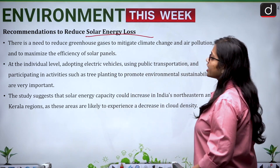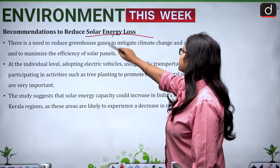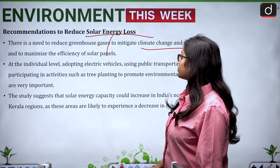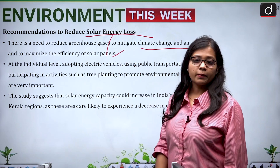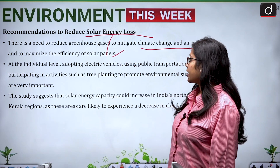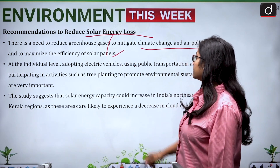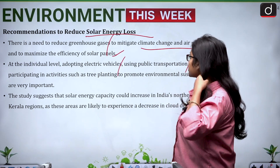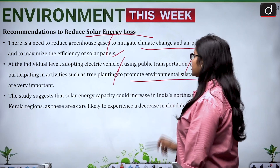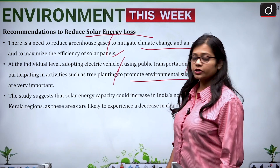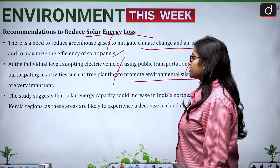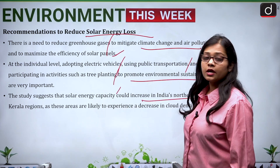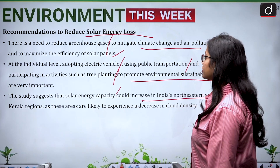Recommendations to reduce solar energy loss include reducing greenhouse gases to mitigate climate change and air pollution and to maximize solar panel efficiency. At the individual level, adopting electric vehicles, using public transportation, and participating in tree planting activities are important. The study also suggests that solar energy capacity could actually increase in India's northeastern and Kerala regions.